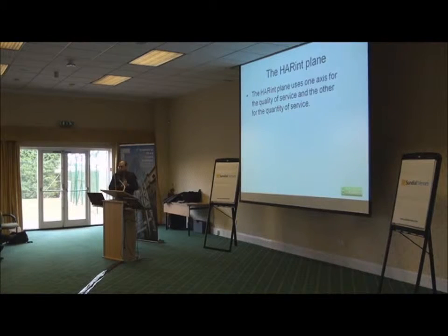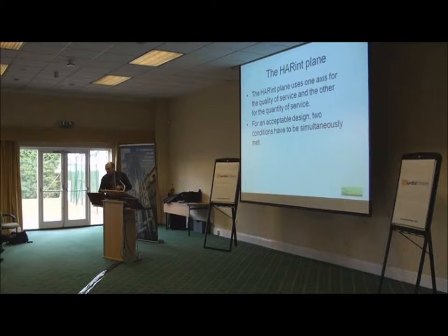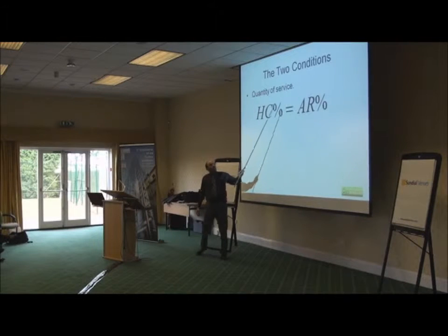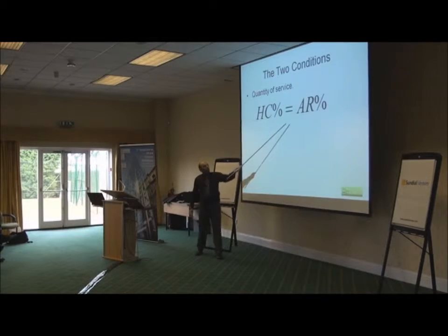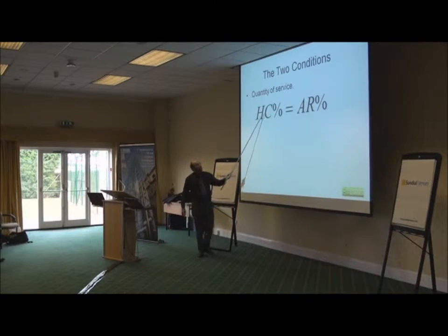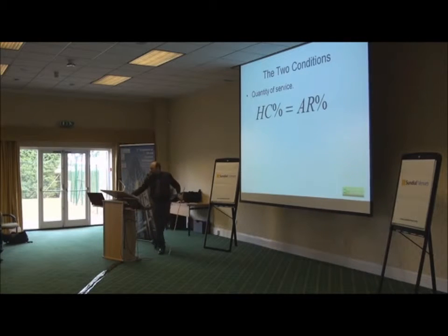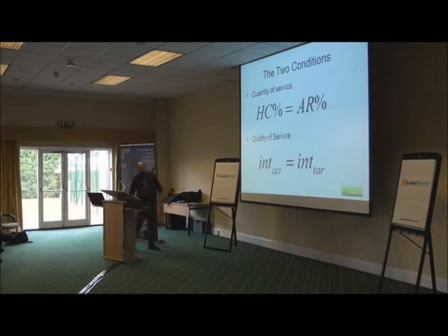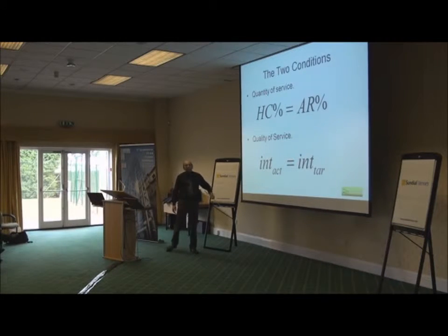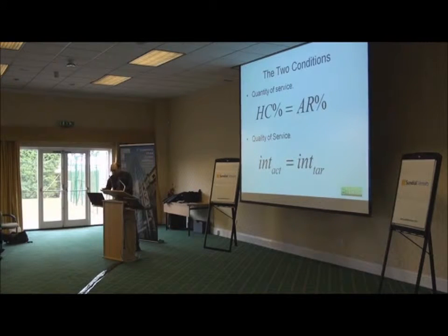The Harren Plane uses one axis for quality of service and one axis for quantity of service. It's an acceptable design if it satisfies two conditions simultaneously. For quantity of service, the design must meet the arrival rate — say 12%, 15%, or 13% — your design has to achieve that. That's the first requirement. For quality of service, we have a target interval and the actual interval must meet that as well. If we meet both, we've met the Harren Plane requirements.